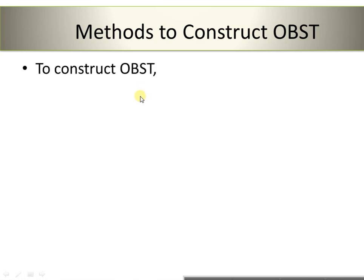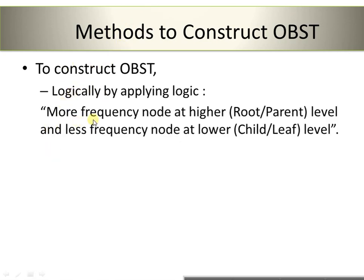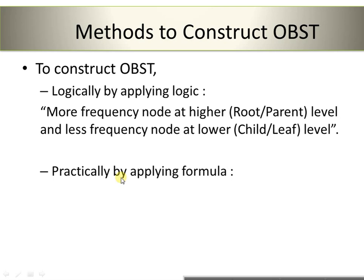There are two methods used for the construction of an Optimal Binary Search Tree. The first method is the Logical Method, where the logic is: a higher frequency node will be placed at a higher level (root or parent level), and a lower frequency node will be at the child or leaf level. The second method is by applying a formula practically.